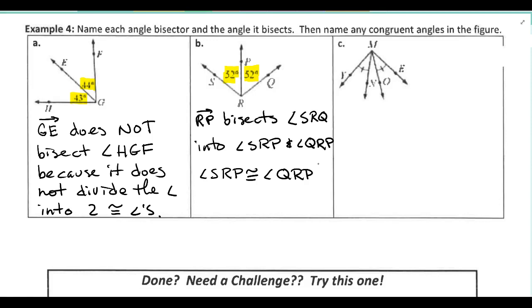Alright. So why don't you pause the video, see what you can come up with for part C. See if you have an angle bisector. See if you have any congruent angles in the figure. And then when you restart, there will be a solution there so you can compare it.